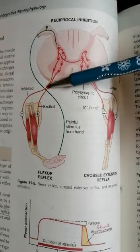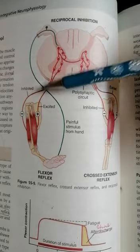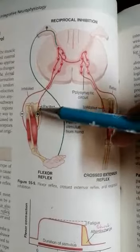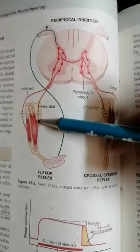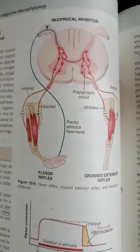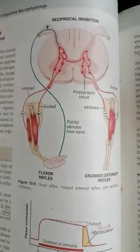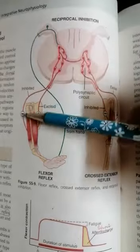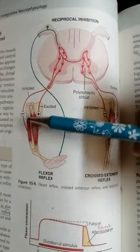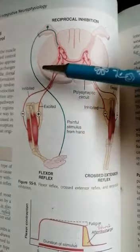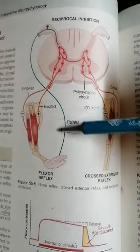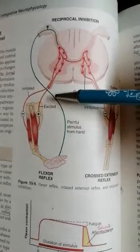This motor neuron transmits impulses to two sides of muscle. It will cause excitation of the flexor muscles, causing contraction of the hand or leg away from the painful stimulus, and it inhibits the extensor muscles — the antagonistic muscles of the flexor muscle. This inhibition is called reciprocal inhibition.